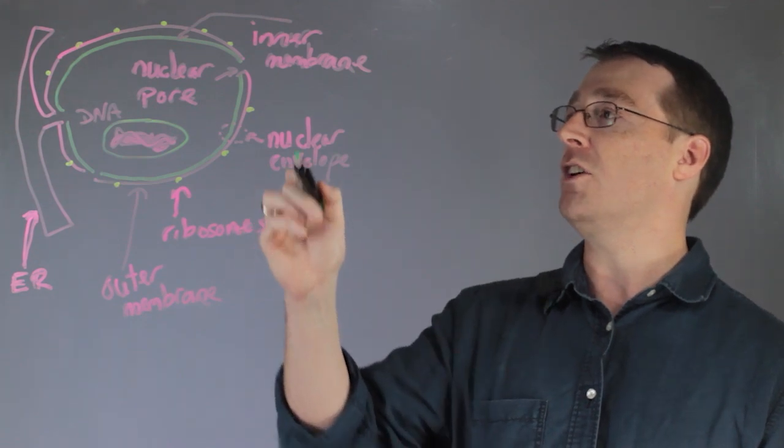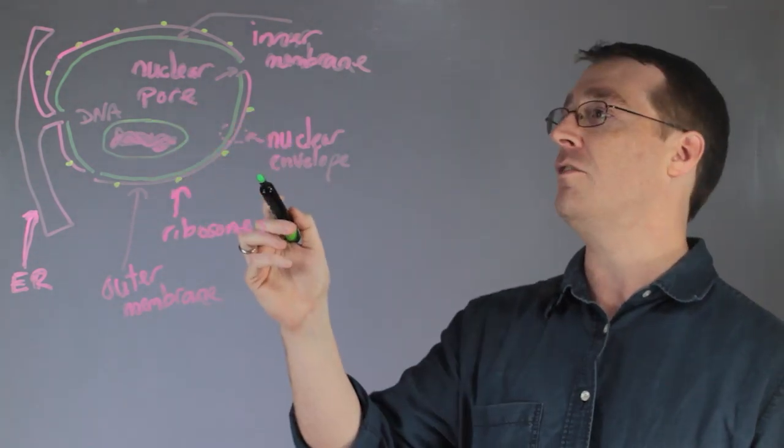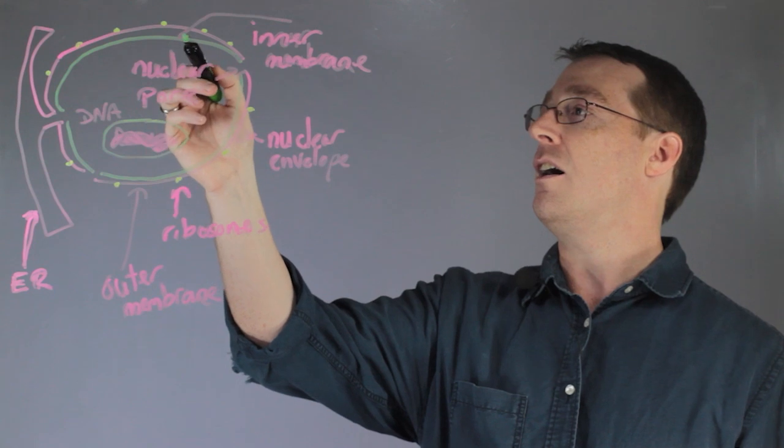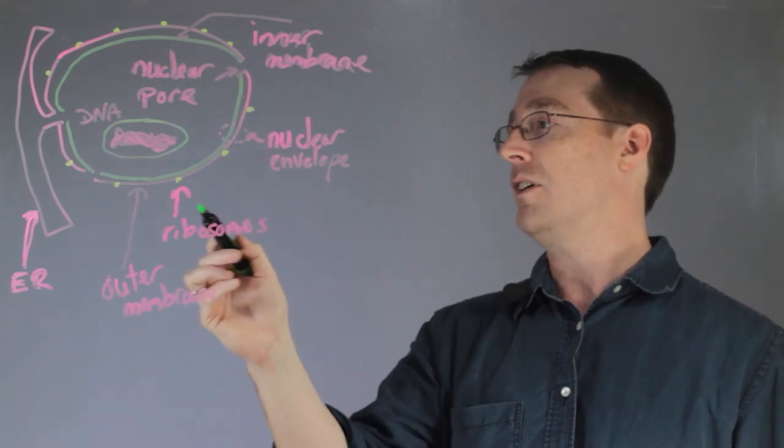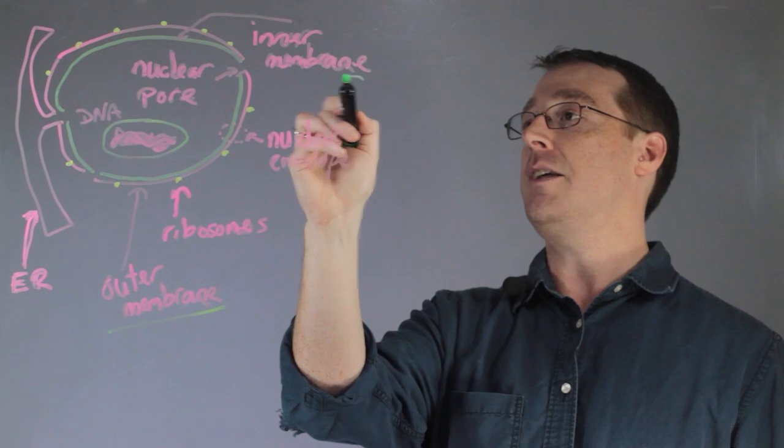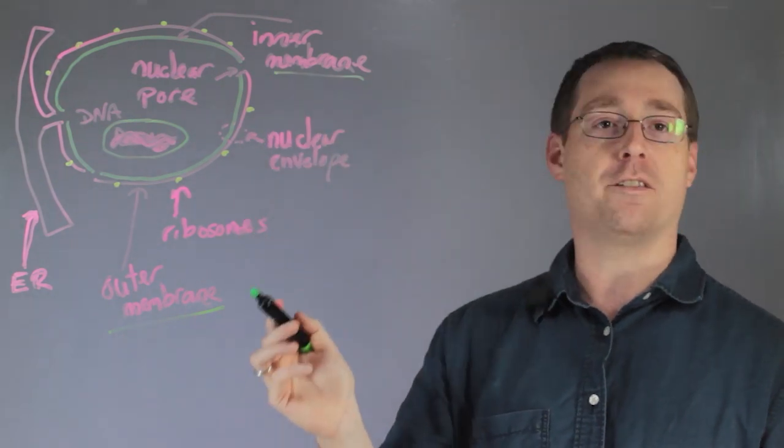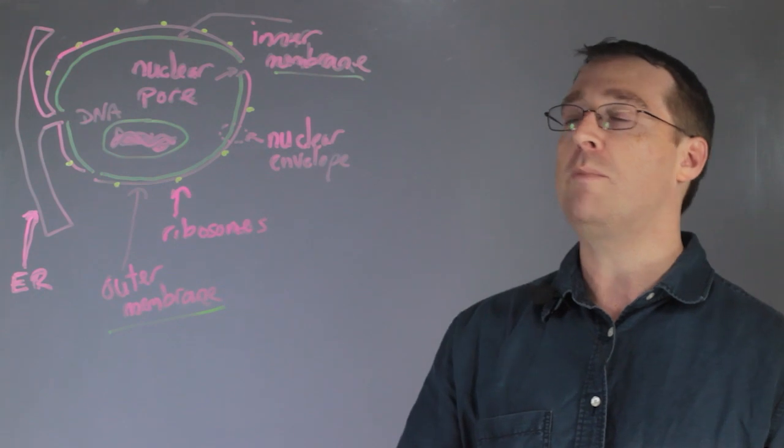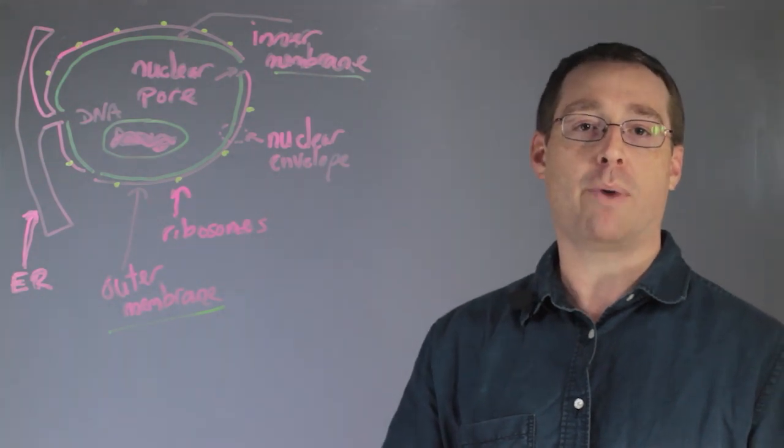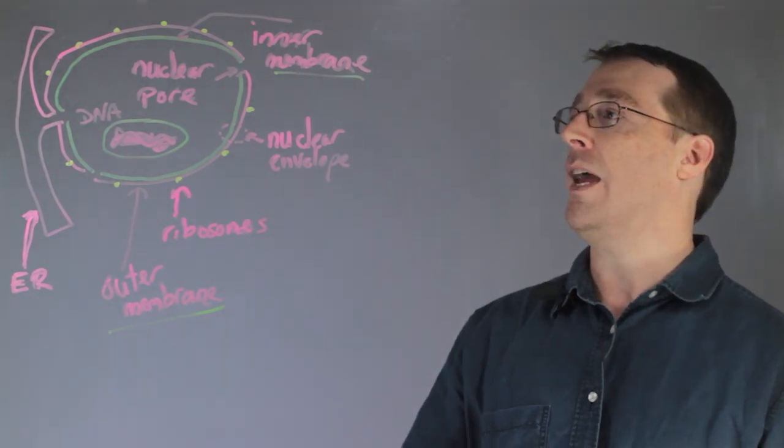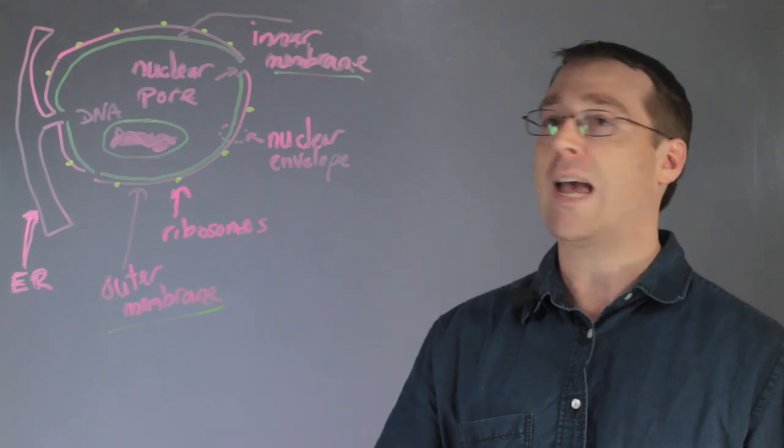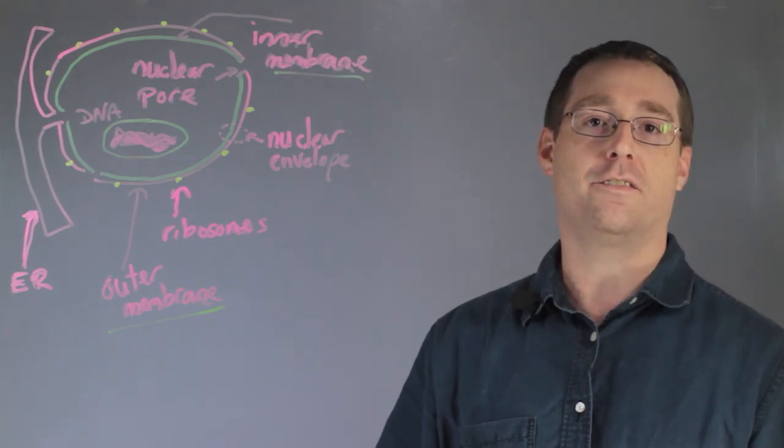Now if we look at the structure of the nucleus itself, we see that the nucleus is composed of both an outer membrane and an inner membrane, and these two are separated by a distance of about 50 nanometers. Both membranes are lipid bilayers and help to encapsulate the contents of the nucleus.